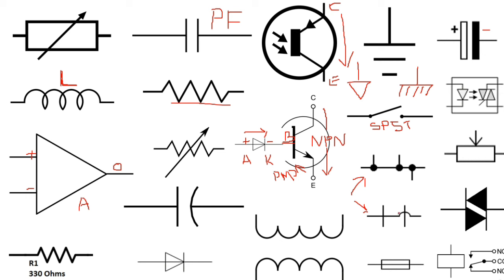Now let's see the integrated circuit pin configuration. As you can see, this is an IC that contains four amplifiers. This is the first pin of this IC — we have this indicator symbol here, so the left pin is pin number one: 1, 2, 3, 4, and so on. For the first amplifier, it has two inputs: pin 2 and pin 3 are inputs for amplifier 1, and pin 1 is the output. Always an amplifier has two inputs — minus input and plus input — and one output.